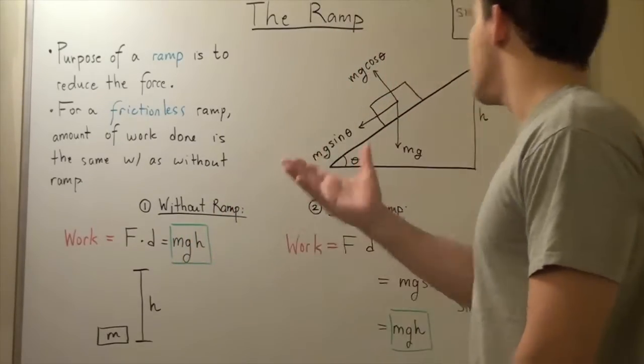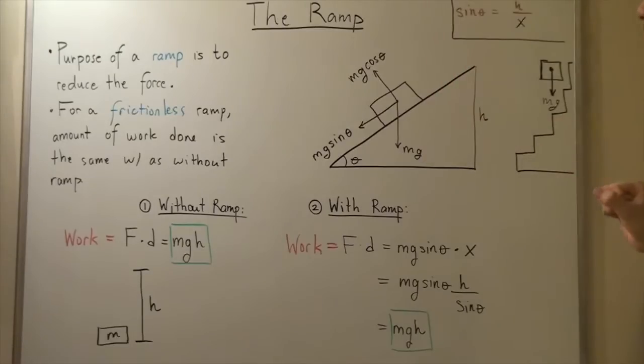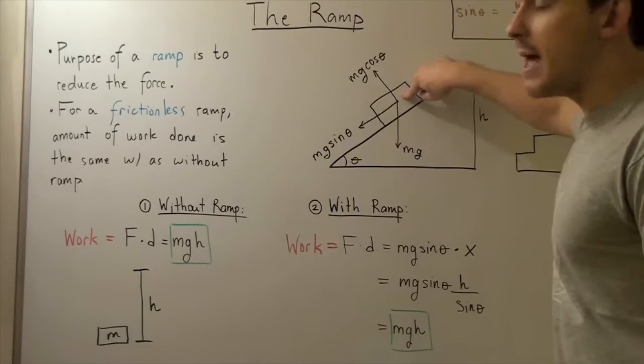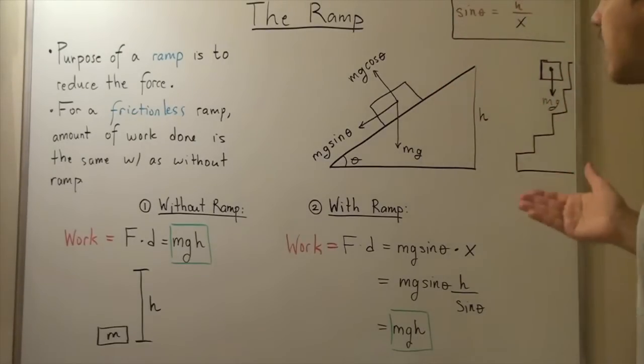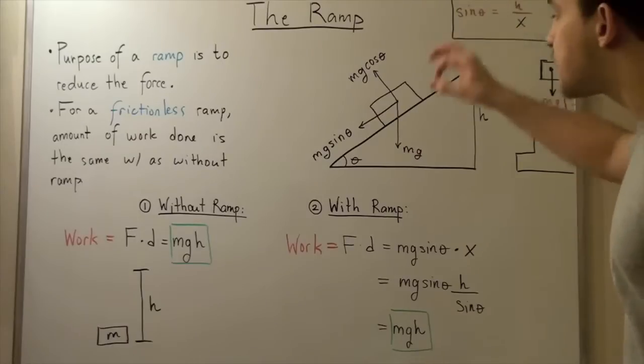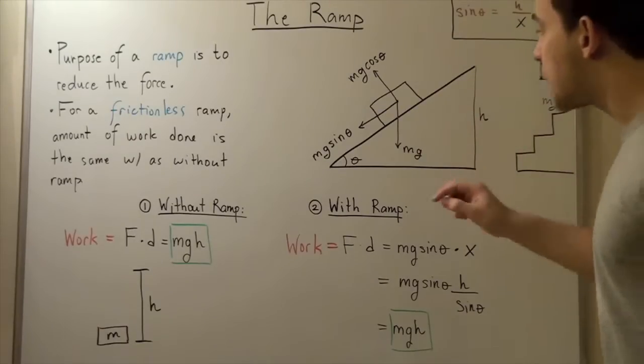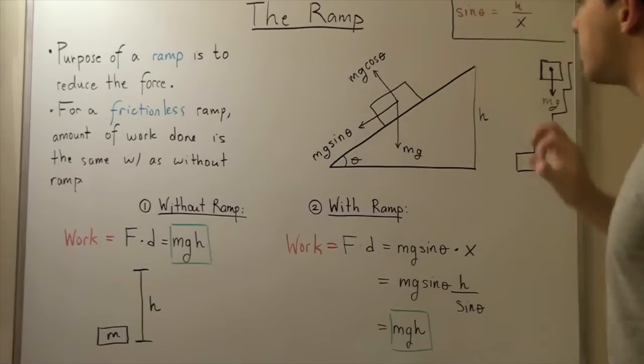So let's look at an example of a ramp. Now in this example, our object with mass m, say some box, is traveling on the ramp, on the surface of the ramp, where the surface is the hypotenuse of our ramp.